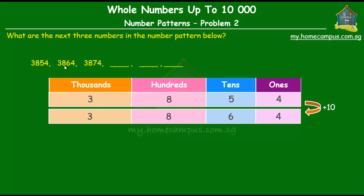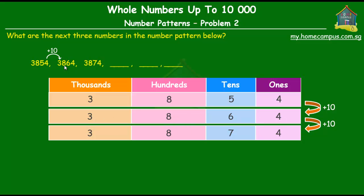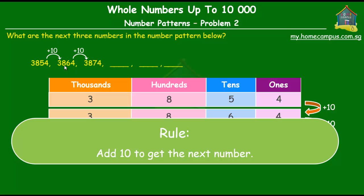So in going from the first number to the second number, there's a difference of 10 — you add 10 to the first number to get the second number. Now the third number is 3874. There's no difference in the ones, there's a difference of one in the tens, no difference in the hundreds and no difference in the thousands. Our rule is again still the same: add 10 to the second number to get the third number. So our rule is add 10 to get the next number.